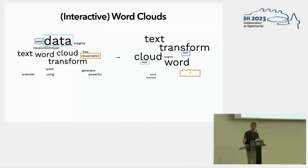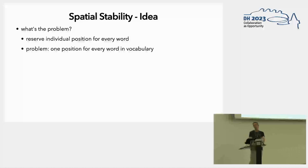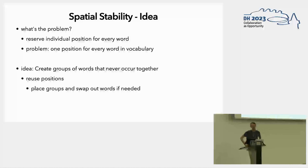So here's the solution. You might say, okay, so there's something called spatial stability that we want. And you might say, so what's the problem? We just use every word and we assign an individual position for each word. It's a basic idea. But actually there's a problem because we have to assign for every word in the vocabulary one specific location. And you can imagine if you have a long text, there are many words. So there's a basic idea that you can create actually groups of words that never occur together. So they can share the same location. So essentially we're using positions and instead of words we place groups. And then in the end we just swap out words if needed.